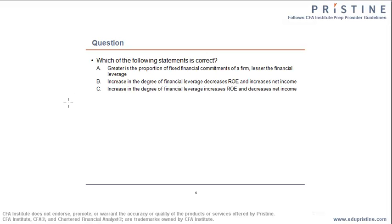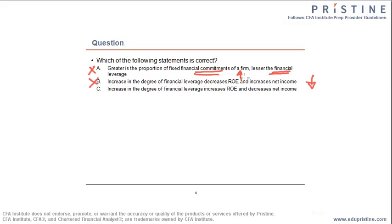Let us try to answer this question based on our understanding so far. Which of the following statements is correct? Choice A: Greater is the proportion of fixed financial commitments for a firm, lesser is the financial leverage. This is false, because greater the proportion of fixed financial commitments such as interest payment on debt, higher is, by definition, the financial leverage of the firm. Choice B: Increase in the degree of financial leverage decreases ROE and increases net income. This is also incorrect, because higher financial leverage decreases net income due to additional interest cost, and increases return on equity because the firm can use debt to buy back equity. Therefore, the right choice is C.